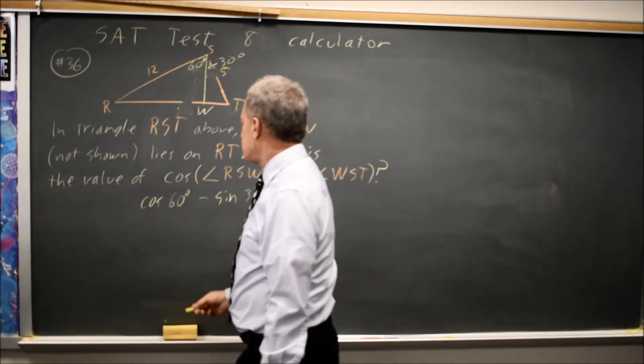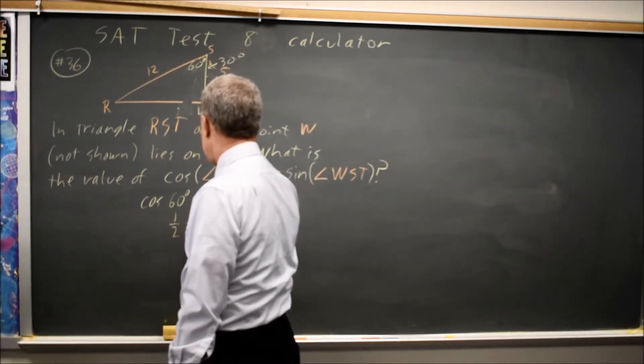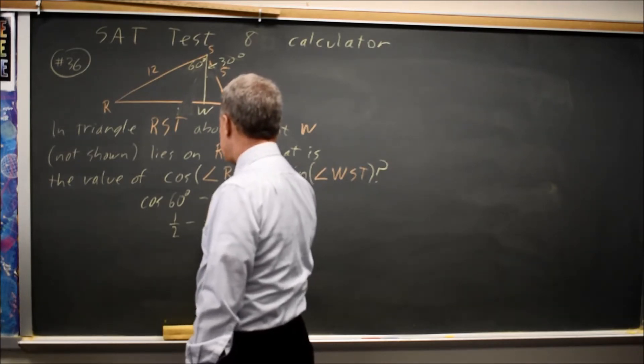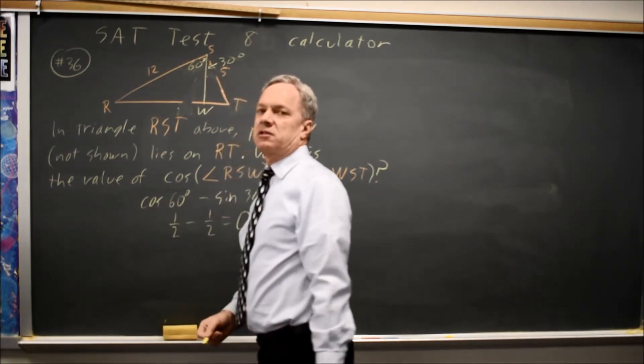Cosine of 60 degrees is 1 half. Sine of 30 degrees is also 1 half. Again, I got 0.